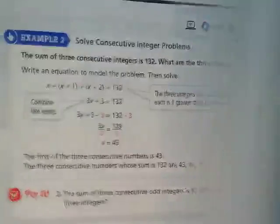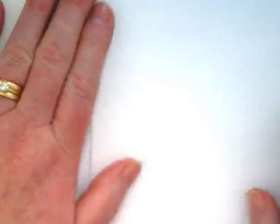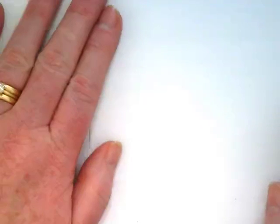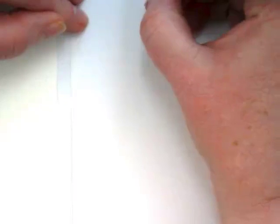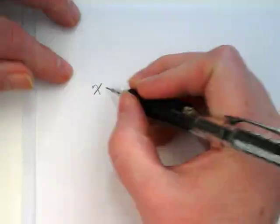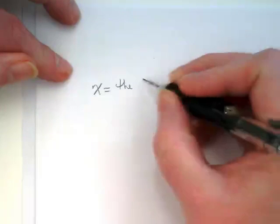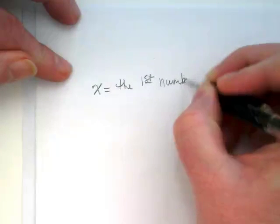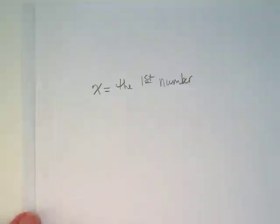Go ahead and close your book. And in your notebook, again I'm not writing this in my notebook because I already have it in there, so mine does not have lined paper. I want you to write X. And X equals the first number.